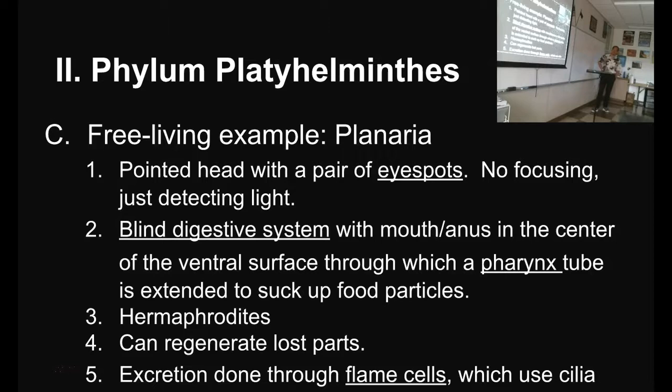They can regenerate lost parts. If you cut a planarian in half, you wind up with two planaria after a while. They excrete through flame cells. They don't burn — they have a bunch of cells around their body that locally gather up toxins and squirt them out. So they don't have a kidney or urinary system; all throughout their body they're just excreting the toxins out.